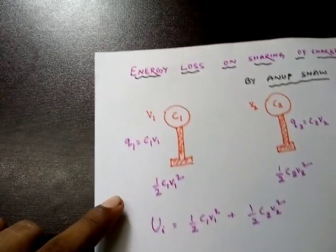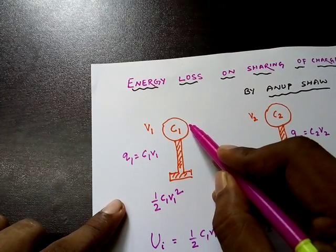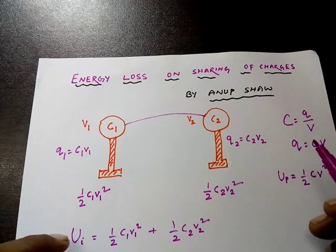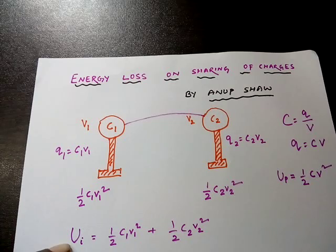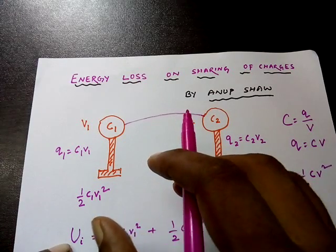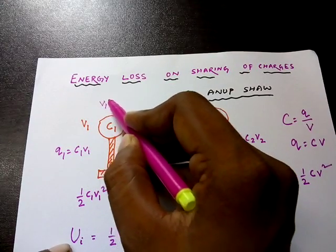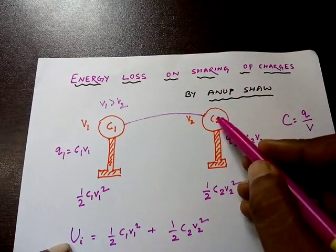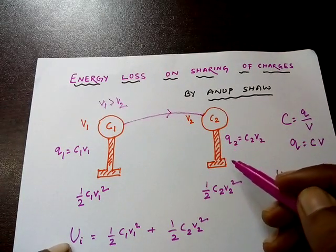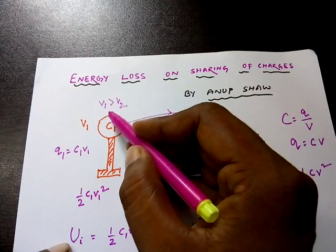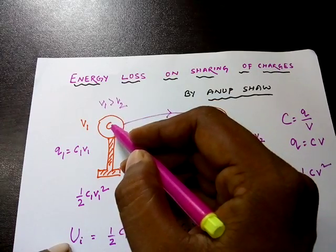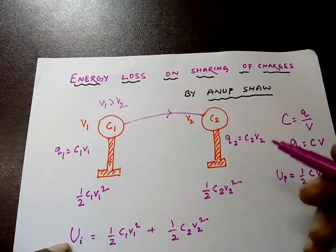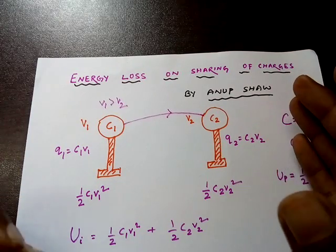Now, if the two conductors are connected by a wire, there will be a distribution of charge. The distribution will stop only when they reach the same potential. Assuming V1 is greater than V2, charge will flow from the first conductor to the second, because positive charge always flows from high potential to lower potential.